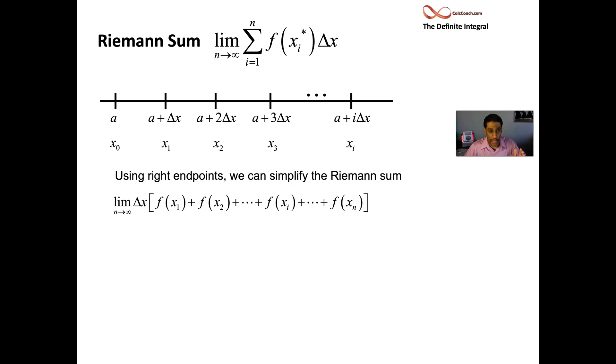In the formula we have f of xi star. Xi star says where in each interval you're going to evaluate. Let's go with right endpoints. Every time I'm at an interval, I go to the right endpoint. The first interval, evaluate at x one. Second interval at x two, third interval at x three, continuing on. The last one is x sub n, which is b.